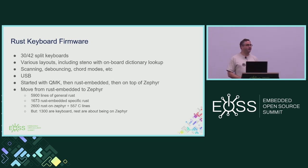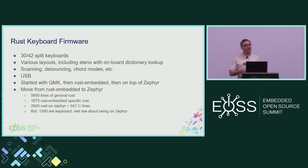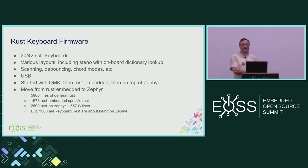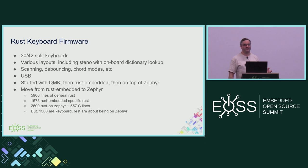I started with QMK, like a lot of people do. It didn't take very long to get firmware running with QMK, but I wanted to do it in Rust. So I started writing my own code with Rust embedded, working with some of the people behind that, and it works. I started running into a lot of issues with HAL support — Rust embedded is kind of a mixed bag as far as how good it is. I also work on Zephyr, I did Rust on Zephyr, so I thought this might be a good combination. So I moved the keyboard firmware to be written in Rust, running on top of Zephyr.